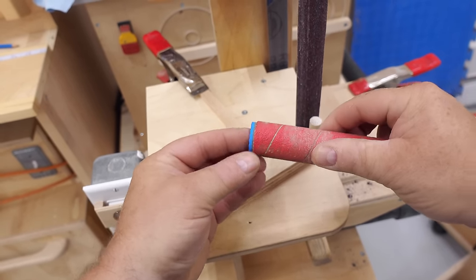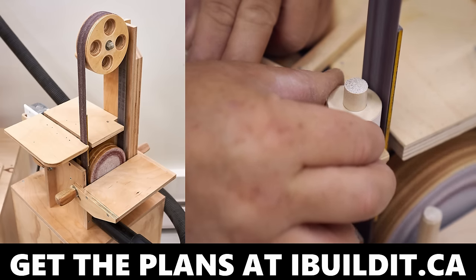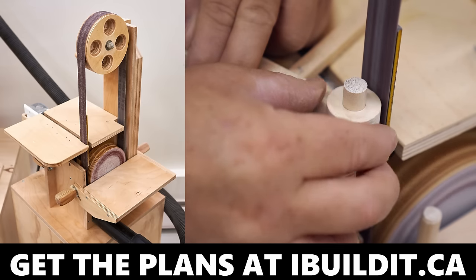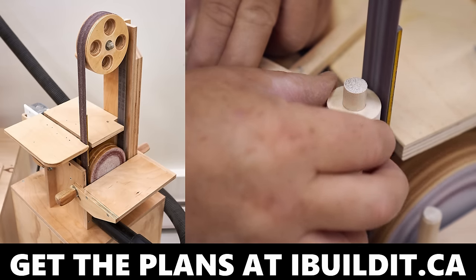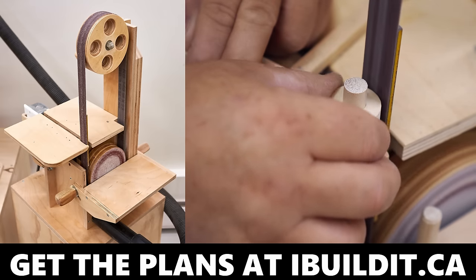I've got a lot of homemade tools in my shop and I use every one of them, but this belt disc sander I use almost every time I'm out here. It's so handy. It's well designed, it's compact and doesn't take up much space, and if you want to build one for yourself, there's plans available on my website. There's a link in the description.